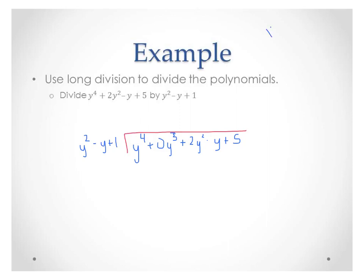Make yourself a note: add missing terms. When you do long division with polynomials, the first question you ask is: y squared times what is y to the 4th? The answer is y squared, because y squared times y squared is y to the 4th. The reason you add missing terms is so that you have these columns — a y to the 4th column, a y cubed, a y squared, a y, and a constant column. So we're going to put y squared above the y squareds.